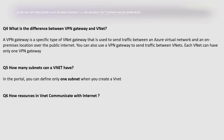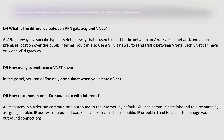How do resources in a VNet communicate with the internet? All resources in a VNet can communicate outbound to the internet by default. You can communicate inbound to a resource by assigning a public IP address or a public load balancer. You can also use a public IP or public load balancer to manage your outbound connection.